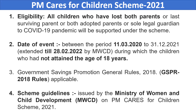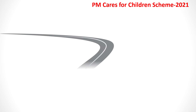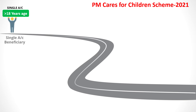Now we will see the scheme details. If the child is below 18 years and his parents have died due to COVID, once he attains 18 years, a single account will be opened in the name of the child himself. If the age is 18 years or above, a single beneficiary account will be opened in the post office, and the amount will be based on a table that we will see later.